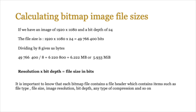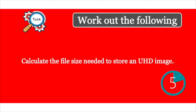All of that has an impact on the size of a bitmap image file. Think about this: if you've got an HD image at 1920 by 1080p and a bit depth of 24 (true color), the file size is simply the resolution multiplied by the bit depth, which gives you the file size in bits. In an exam you would then divide by 8 to get bytes, divide by 1024 to get kilobytes, and divide by 1024 again to get megabytes. It is also important to know that each bitmap image contains a file header. The file header contains key elements such as the bit rate, the resolution, and any type of compression that the image uses.